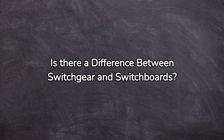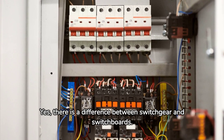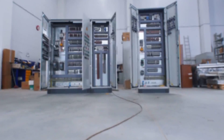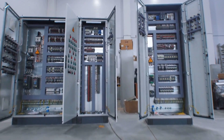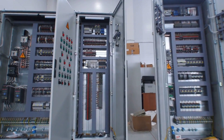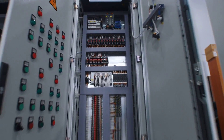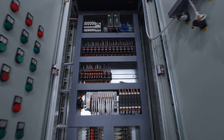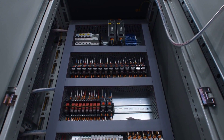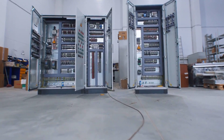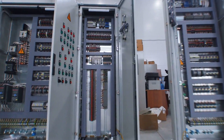Is there a difference between switchgear and switchboards? Yes, there is a difference. A switchboard is an assembly of switchgear with or without instruments, but the term does not apply to groups of local switches in final circuits. Switchgear refers to the electrical equipment used to control, protect, and isolate electrical power systems — it typically includes circuit breakers, fuses, switches, and relays, and is designed to operate at high voltages and currents. Switchboards, on the other hand, are typically low voltage distribution boards used to distribute power to various electrical loads within a building or facility.